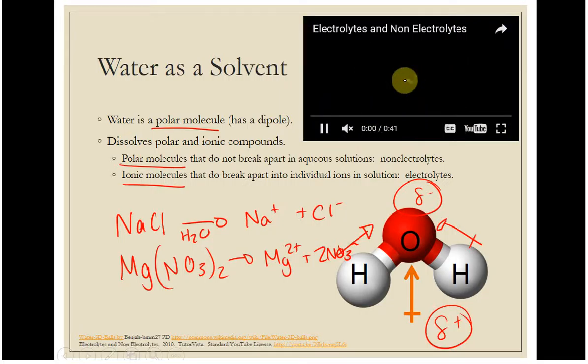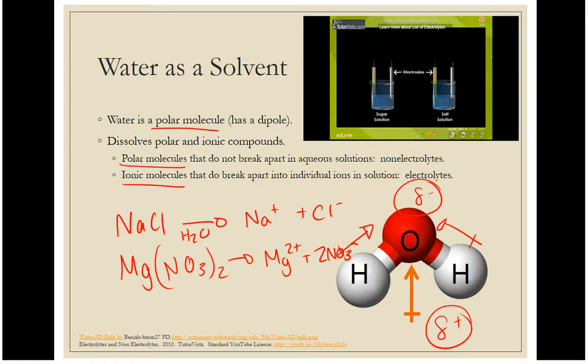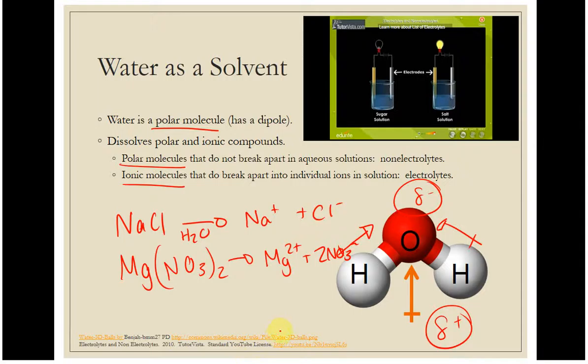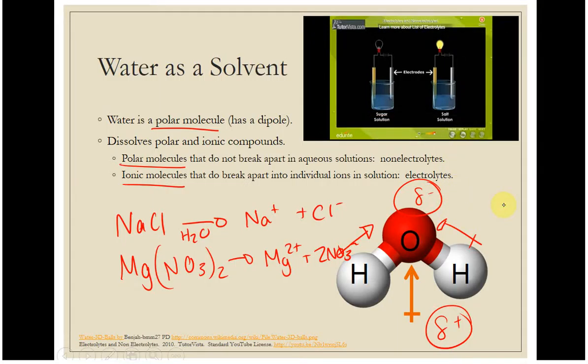You can set up a light bulb kind of similar to this. If you have things like sugar or ethanol alcohol solutions, you're not going to get the light bulb to light up, whereas if you have salt or other ionic compounds that are soluble, you have an electrolyte there. That is going to be important as we talk about types of reactions in this unit and later on.